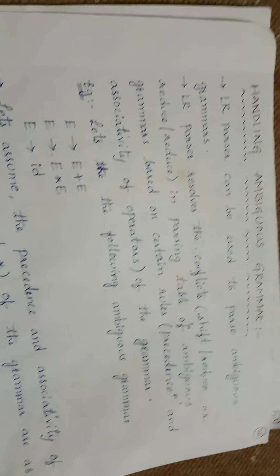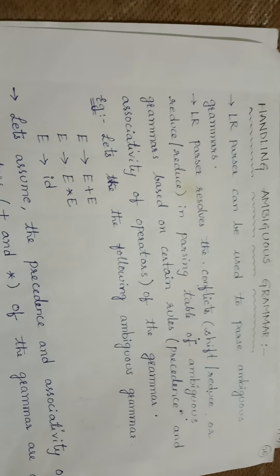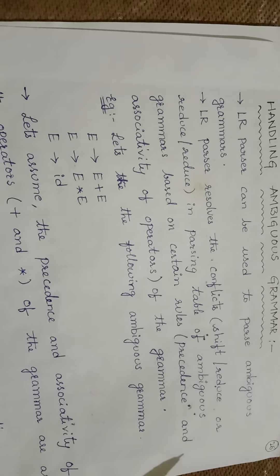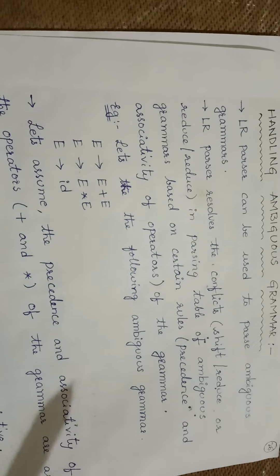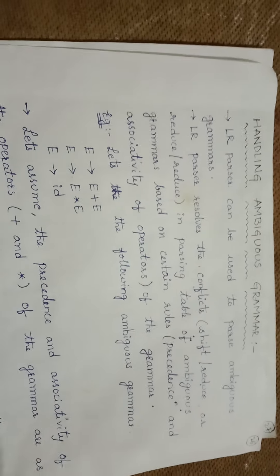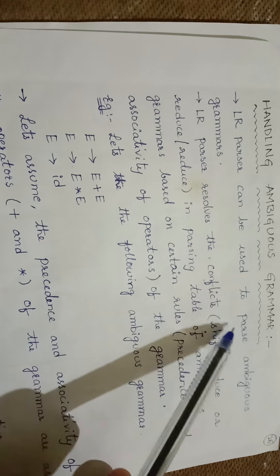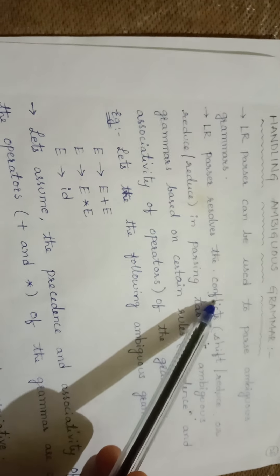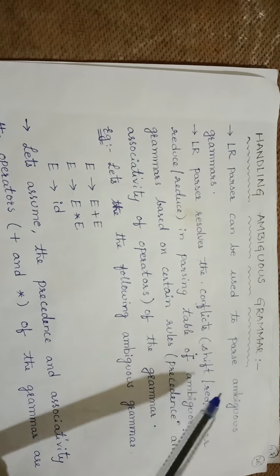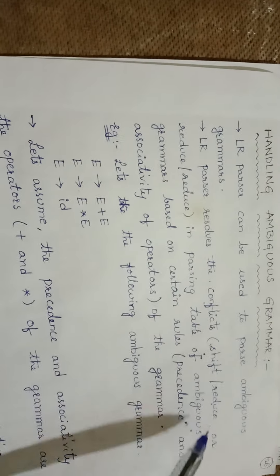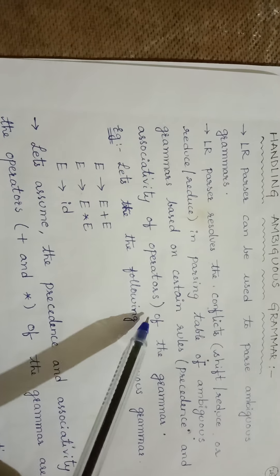Handling ambiguous grammar. Ambiguous grammar is when we have more than one parse tree for a given grammar. LR parsers can be used to parse ambiguous grammars. The LR parser resolves shift-reduce or reduce-reduce conflicts in the parsing table of ambiguous grammars based on certain rules — that is, precedence and associativity of operators of the grammar.